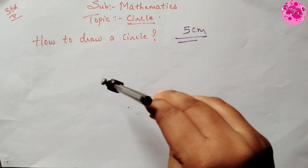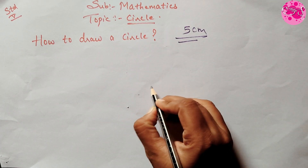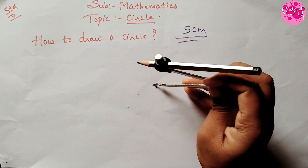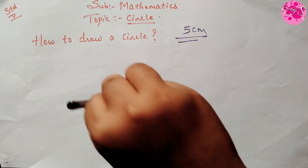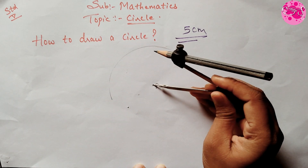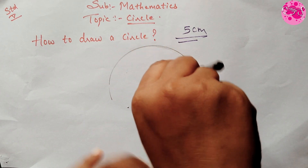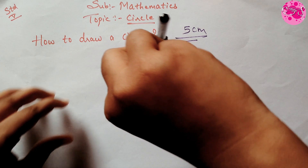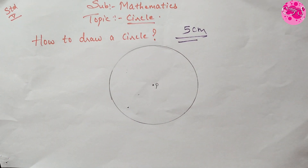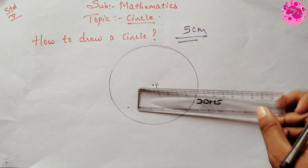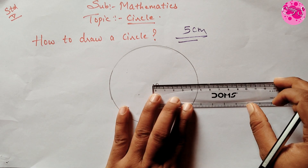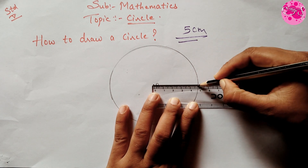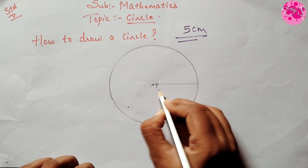Then take a point P on the paper and place the metal point end on it. Turn the pencil point on the paper around it. The figure formed is a circle with center P and radius 5 cm. Draw the line from the center to the end of the circle and write down 5 cm.